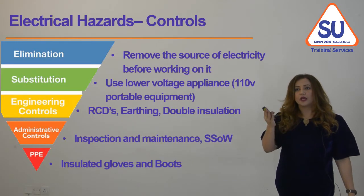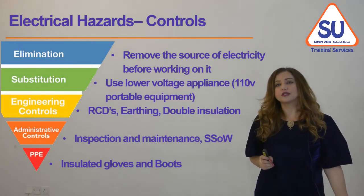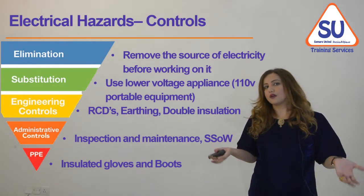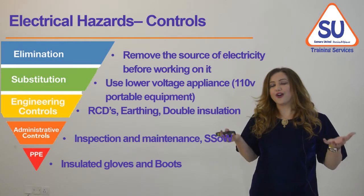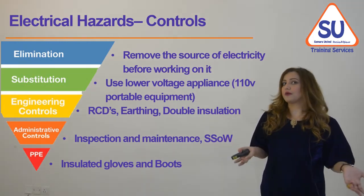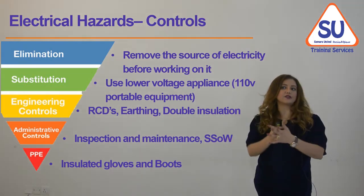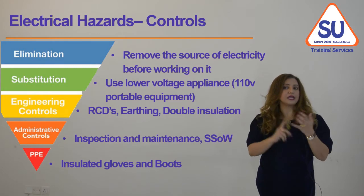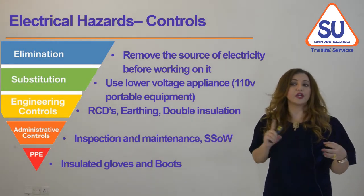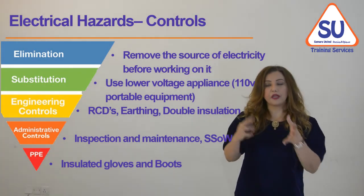When we talk about electrical hazard controls, we follow the logical order of the hierarchy of control measures, which we have discussed many times before, and apply it to electrical hazards. The hierarchy is: elimination, substitution, engineering controls, administrative controls, and PPE.